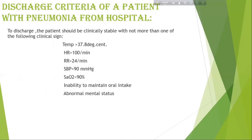Discharge criteria for a patient with pneumonia: The patient should be clinically stable with not more than one of the following clinical signs — temperature more than 37.8°C, heart rate more than 100 beats per minute, respiratory rate more than 24 breaths per minute, systolic blood pressure less than 90 mmHg, oxygen saturation less than 90%, inability to maintain oral intake, or abnormal mental status.